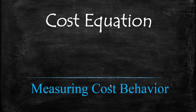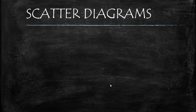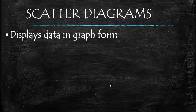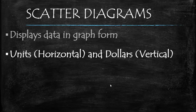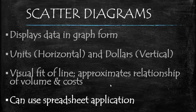The cost equation is used popularly within a managerial environment because it allocates total cost into two components: fixed cost and total variable cost. Our cost equation is accomplished by three methods. The first is the scatter diagram — the display of all data points in graph form where the horizontal axis represents units and the vertical axis represents dollars. The data points are fitted to a line to approximate the relationship between volume and cost, typically accomplished through a spreadsheet application.